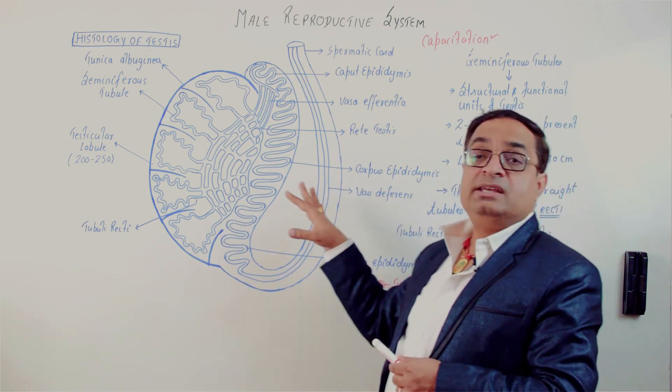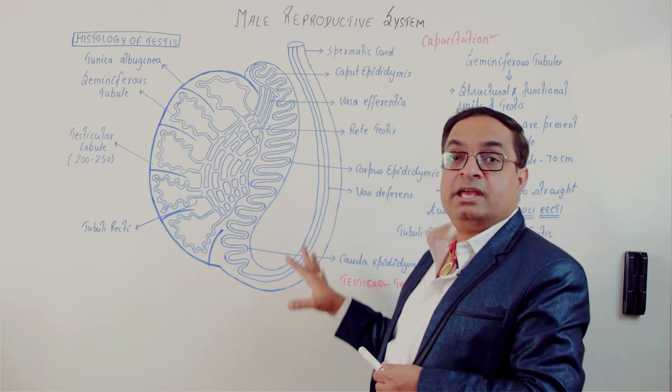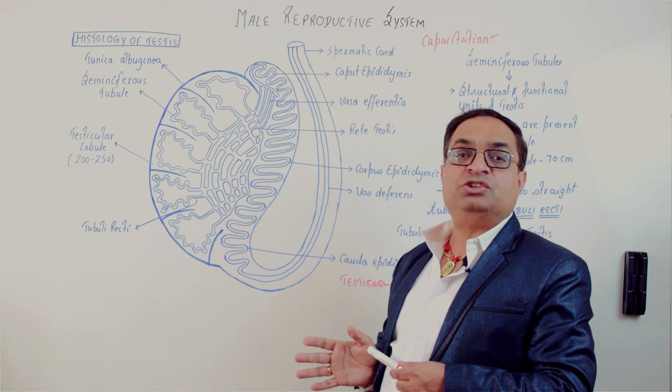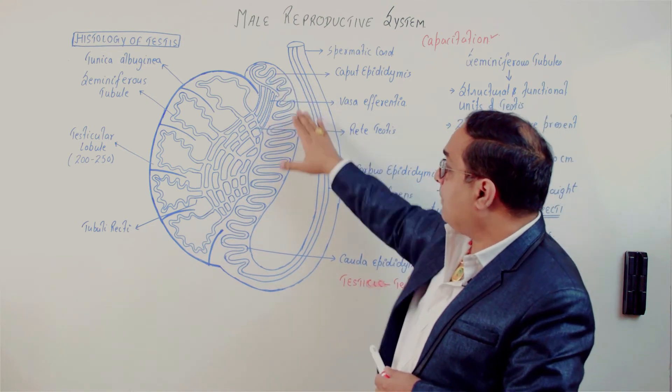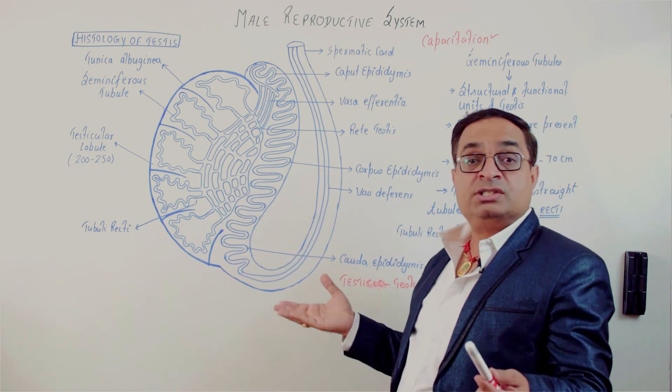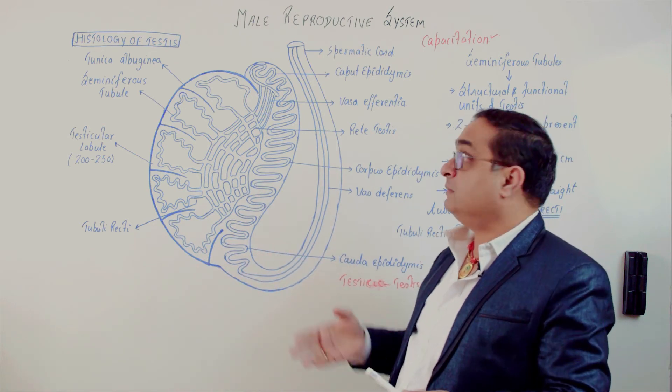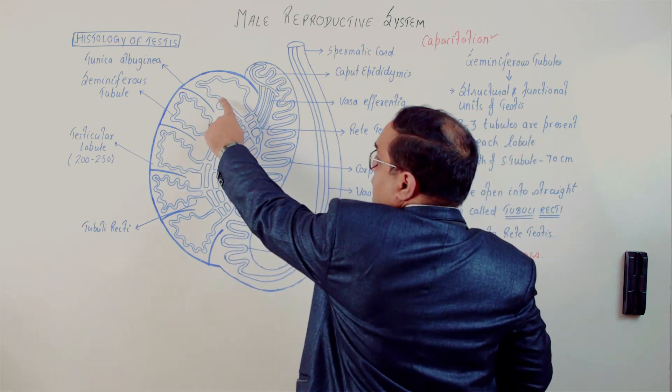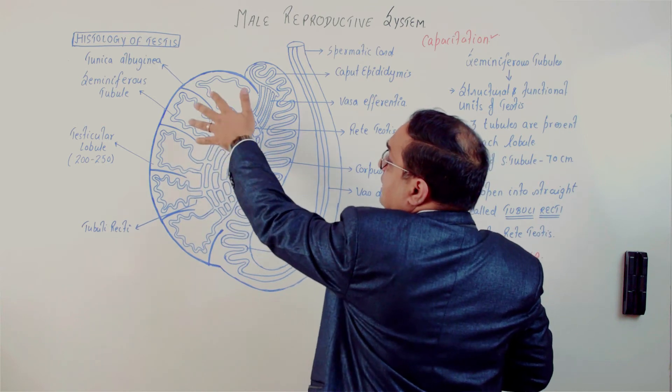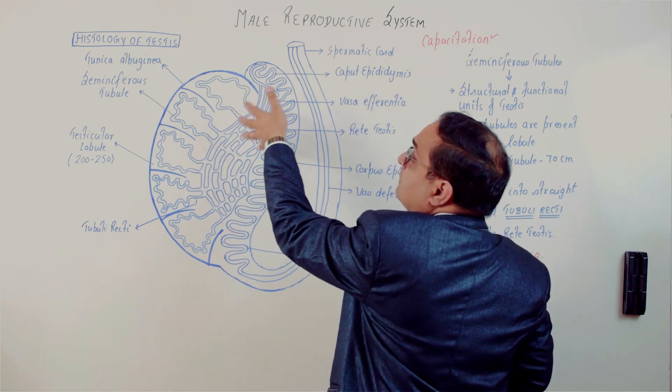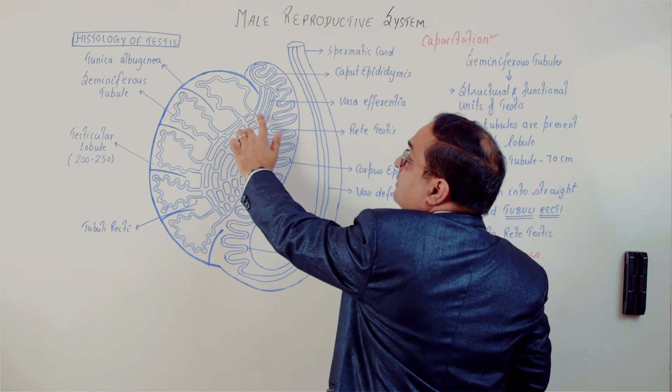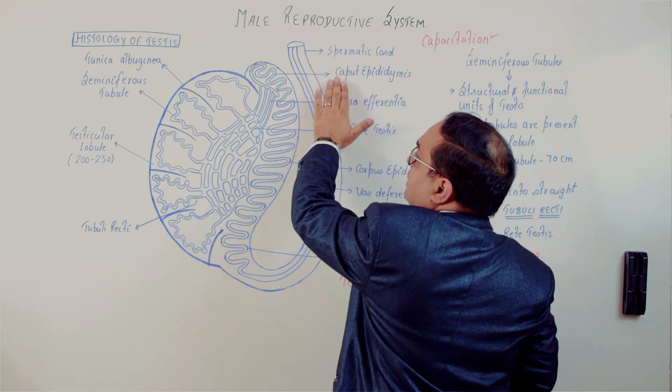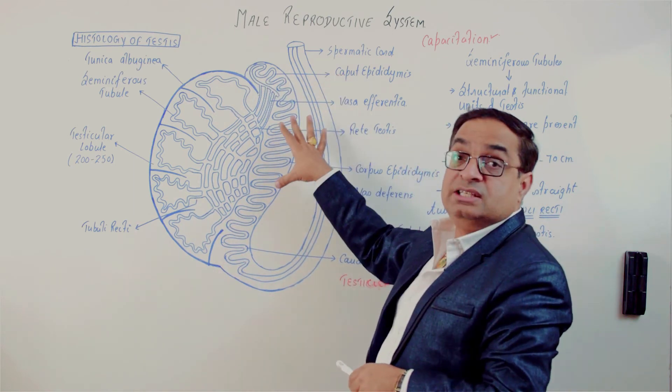As far as motility is concerned, it is the epididymis where the sperms acquire motility. The percentage of motility and the pattern of motility changes as the sperms move from the caput to the cauda region. Now how is it possible for the immotile sperms to reach the caput region when they don't have motility? It is the fluid which is continuously produced by the seminiferous tubules that is propelling the sperms forward, plus peristalsis occurs in vasa efferentia. So by the propulsion movement, the sperms are carried towards the caput epididymis.